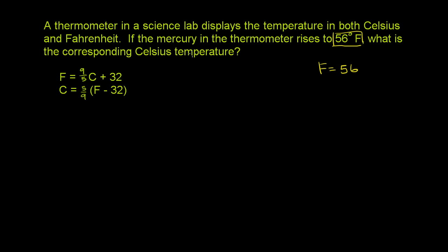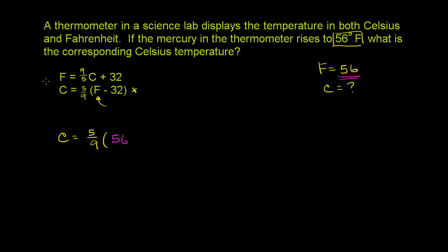They're asking us for the Celsius temperature, so we need to figure out what the Celsius temperature is. In this formula, if you know the Fahrenheit temperature, then you can solve for the Celsius temperature. So let's use this: our Celsius temperature is going to be 5 ninths times the Fahrenheit temperature. The Fahrenheit temperature is 56 degrees Fahrenheit minus 32.